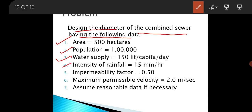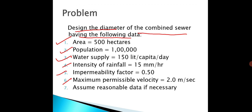Intensity of rainfall is 15 mm per hour, impermeability factor is 0.50, and maximum permissible velocity is 2 metre per second. So let us solve the example.